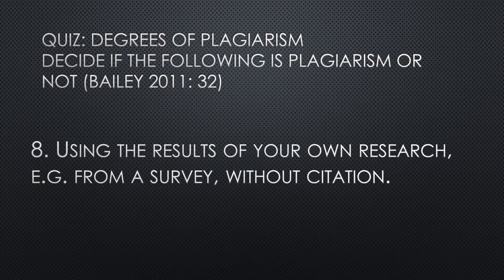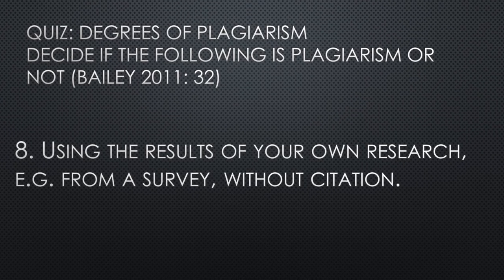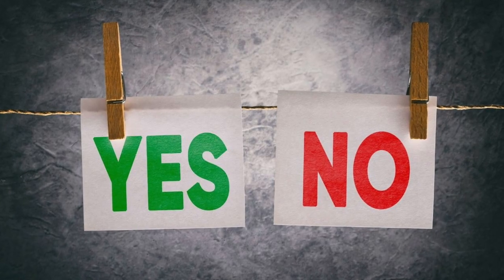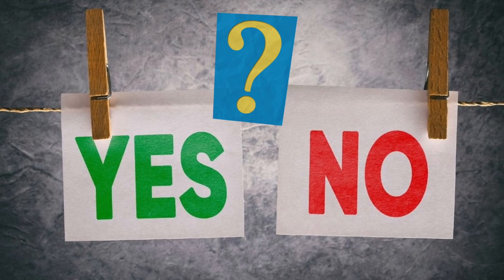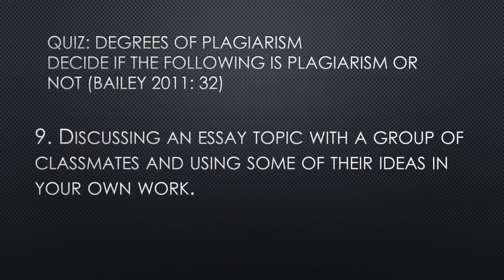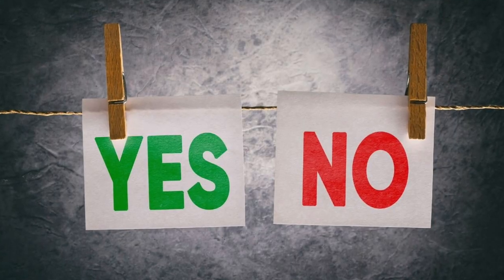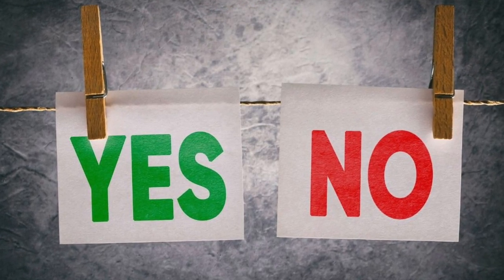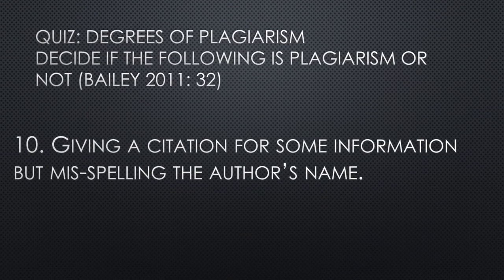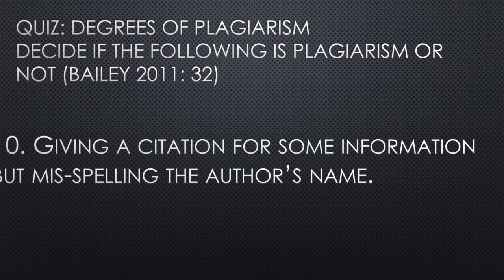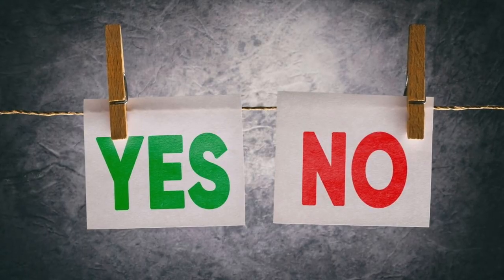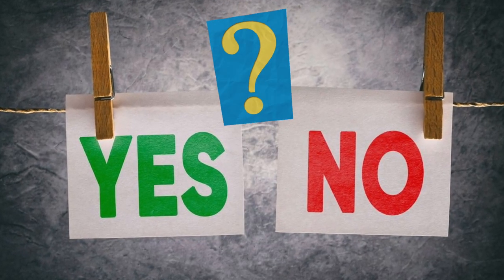Using the results of your own research, for example from a survey, without citation. Discussing an essay topic with a group of classmates and using some of their ideas in your own way — oh, this is tricky! And finally, giving a citation of some information but misspelling the author's name. What is it? Is it plagiarism?